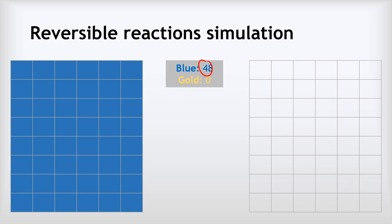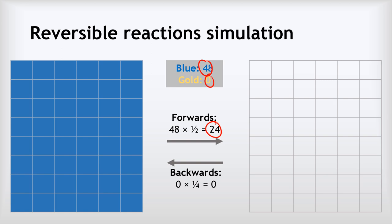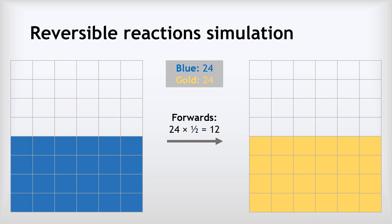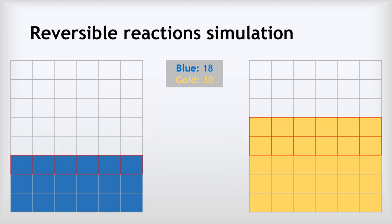Half of the blue squares turning gold is like the forwards reaction having a low activation energy, and only a quarter of the gold turning back to blue is like the backwards reaction having a high activation energy. We start with 48 blues and 0 golds. Half of the blues turn gold — that's 24 — and a quarter of 0 is 0. So we now have 24 blues and 24 golds. Next round: half of the 24 blues give us 12 new golds, and a quarter of 24 golds gives us 6 new blues, leaving 18 blues and 30 golds.